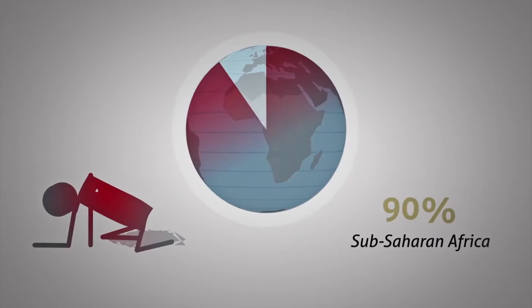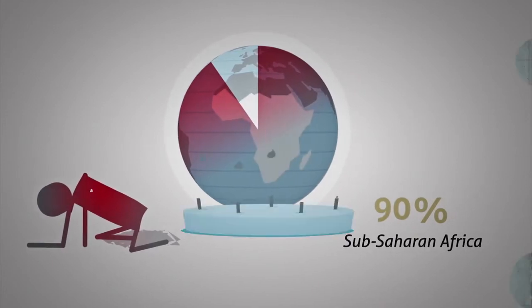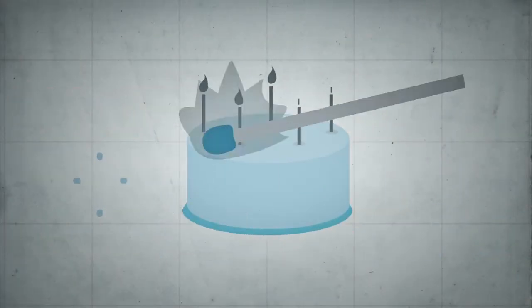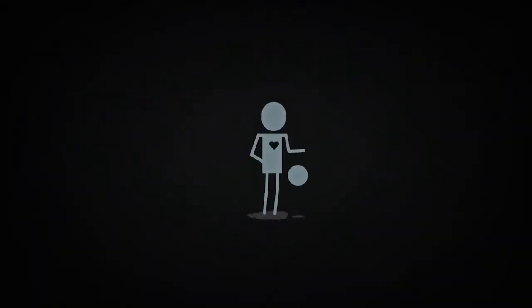90 percent of deaths are in sub-Saharan Africa and in 2012 malaria killed nearly half a million children before their fifth birthday. That's about one child dying every minute.